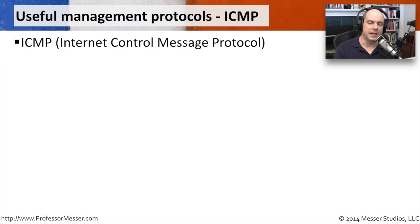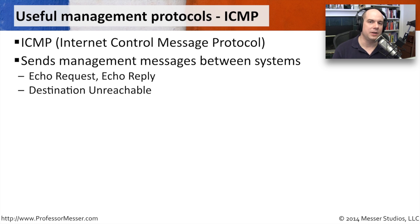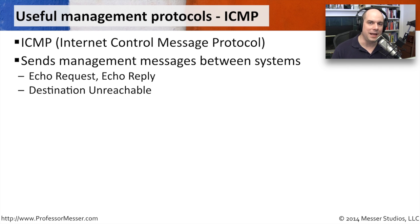A useful protocol used all the time by network administrators is ICMP — Internet Control Message Protocol. It's often used to send little messages between computers. An echo request and an echo reply are very common examples of this. When you type ping and an IP address, what's really happening is an ICMP request is made to another server, and hopefully you receive an ICMP reply. We call those a ping request and a ping reply, but behind the scenes, that's exactly what's happening.